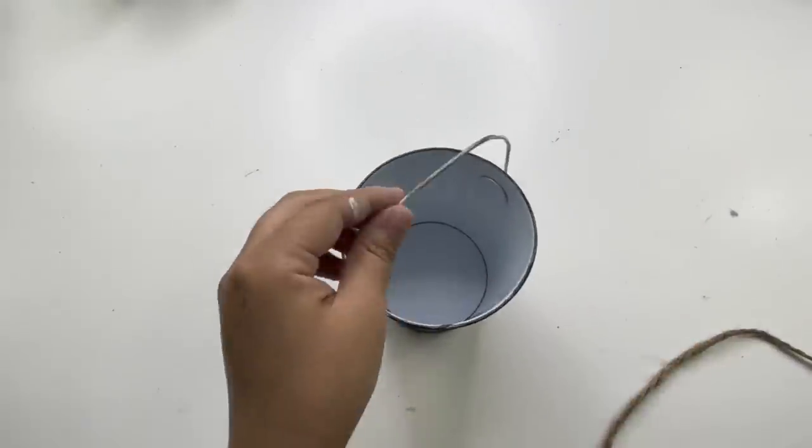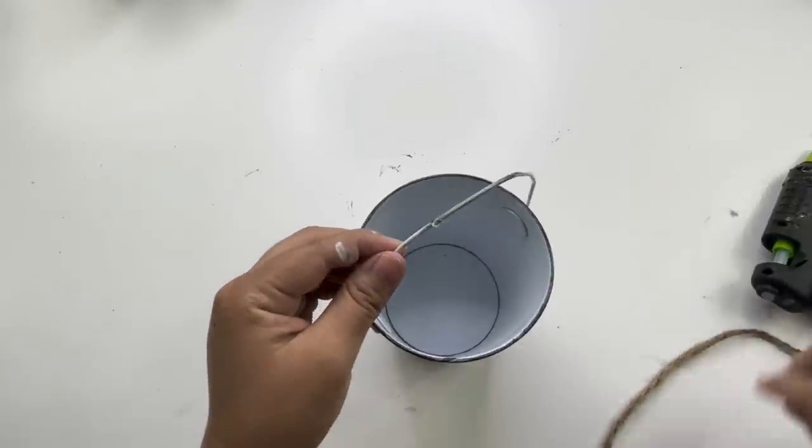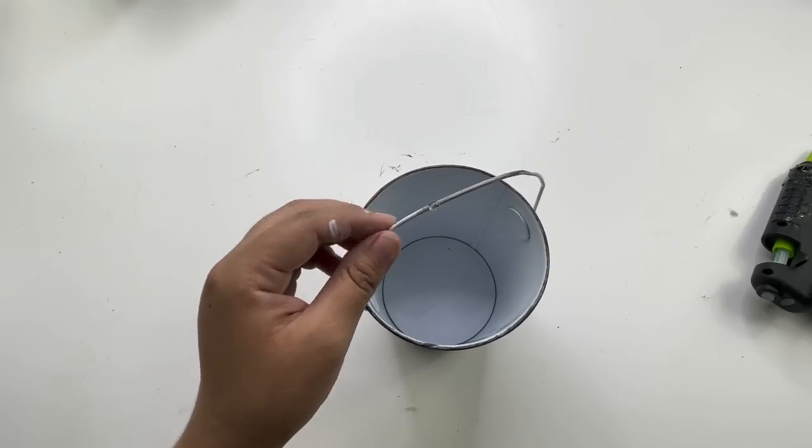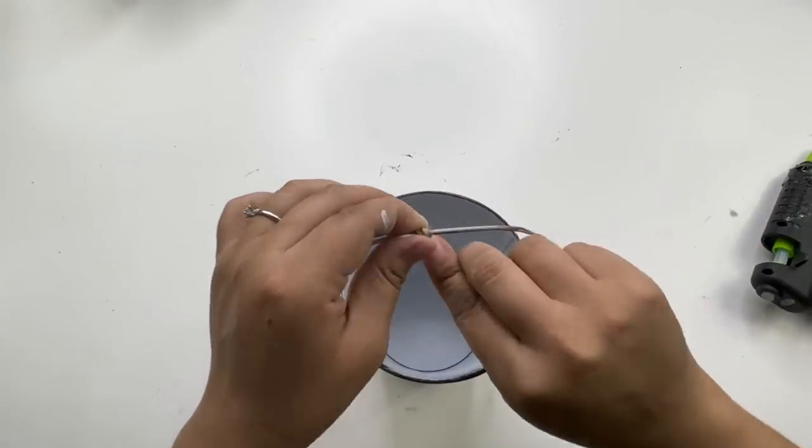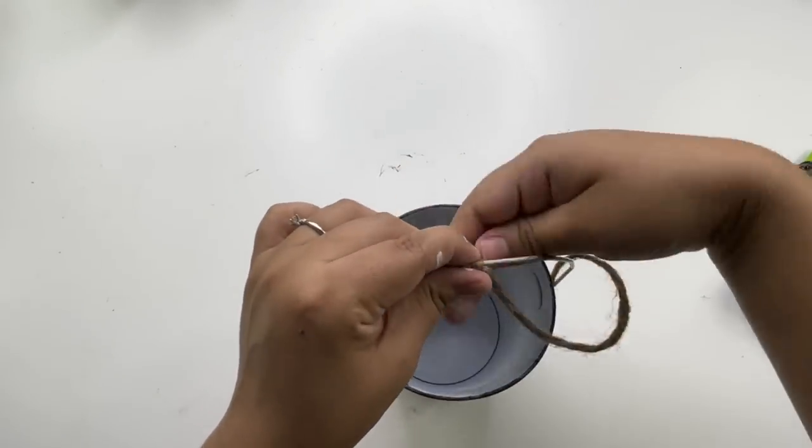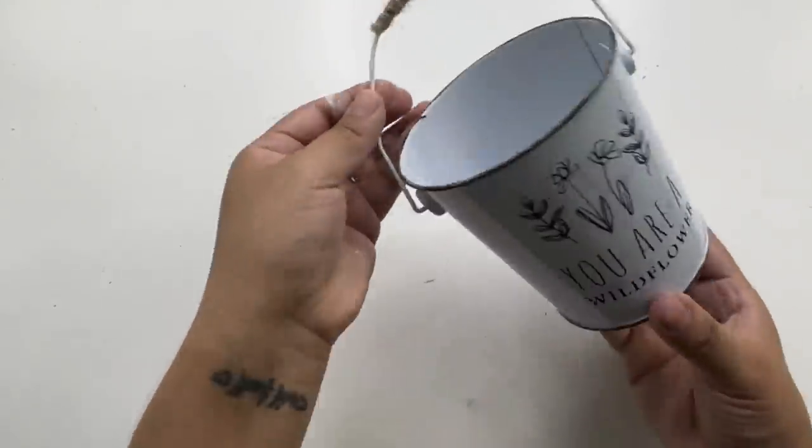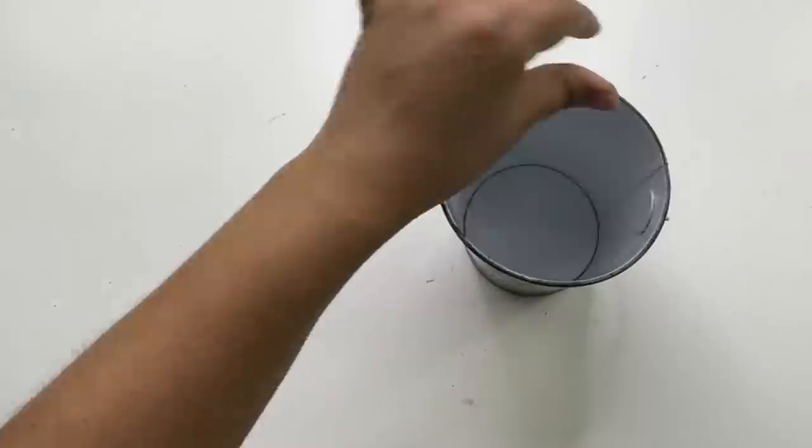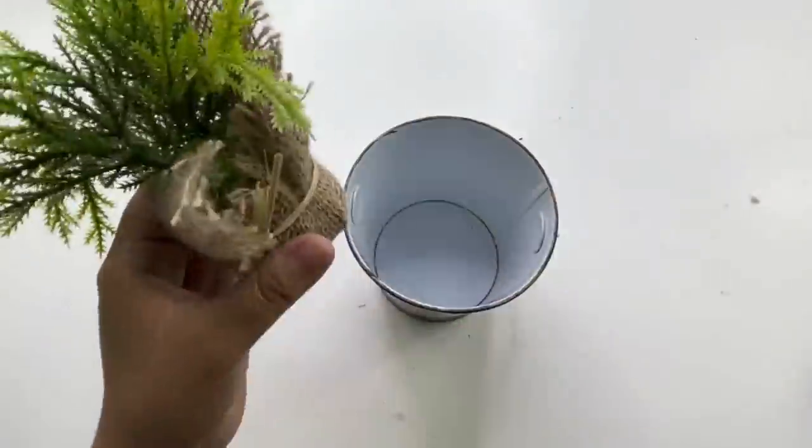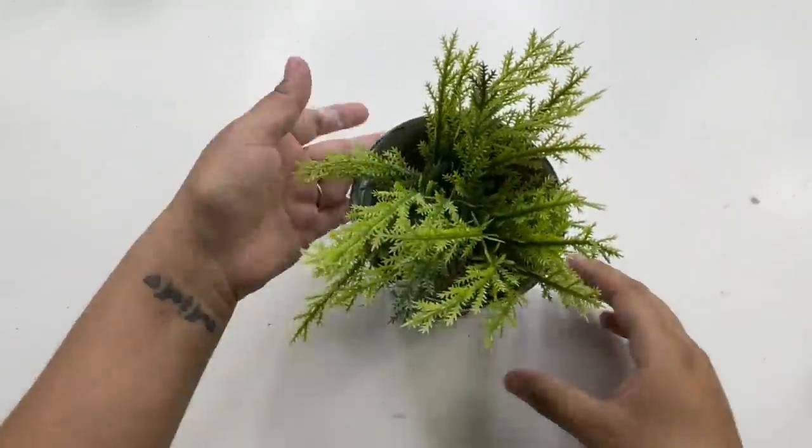To decorate the bucket a little more, I will be adding some jute twine to the handle. And that is it for this bucket. Now you can add whatever greenery you like. I'm using this Dollar Tree one.